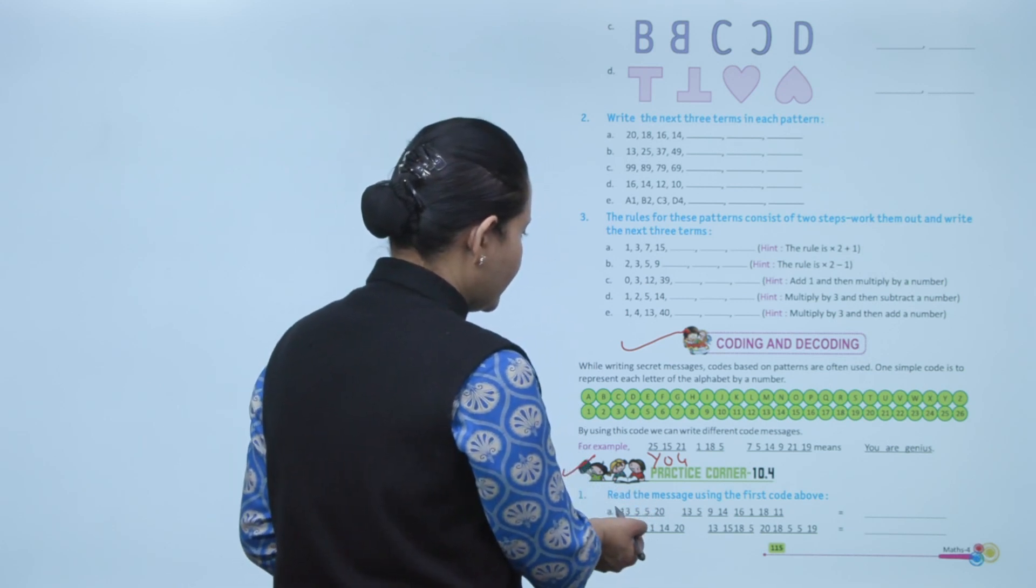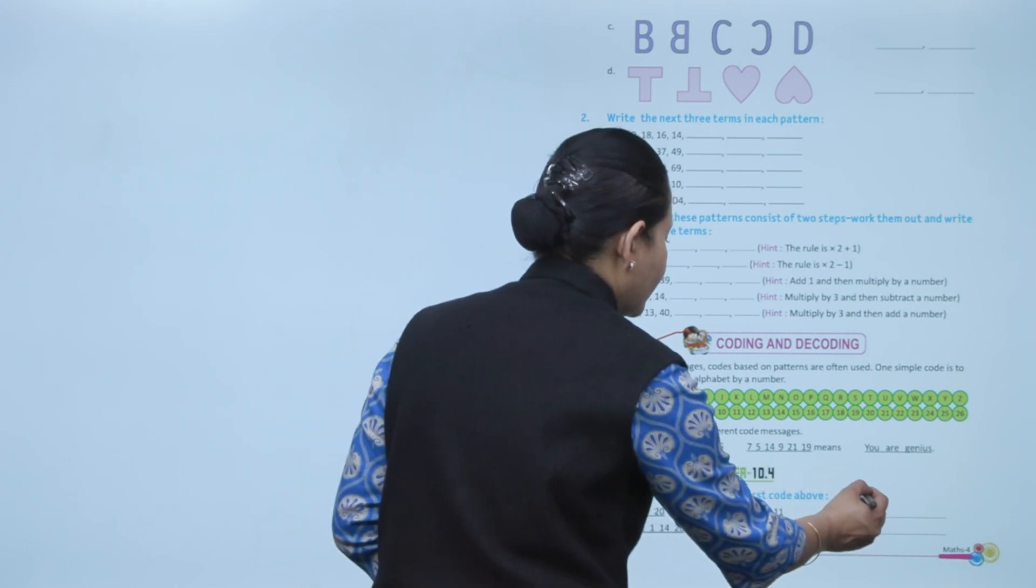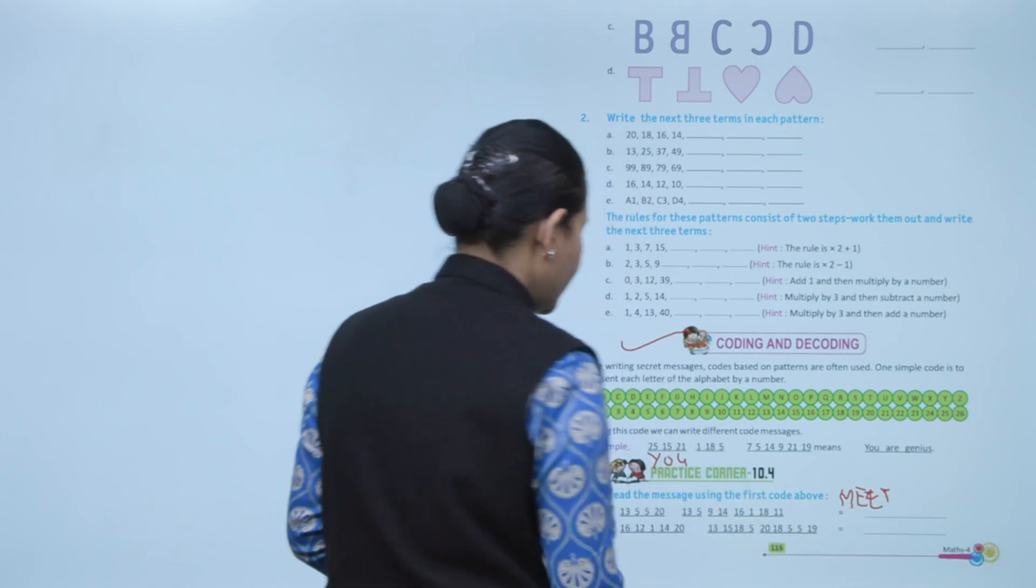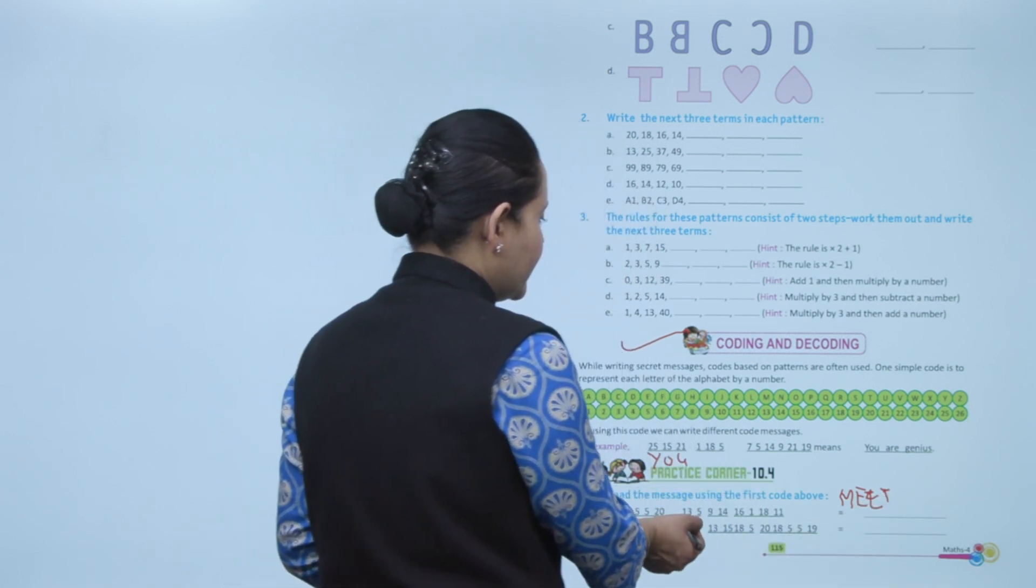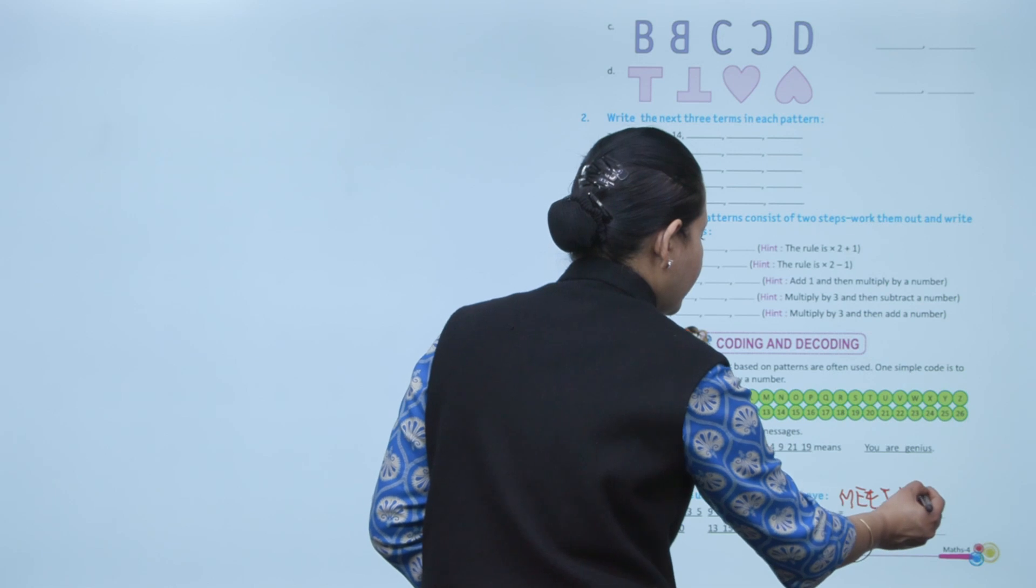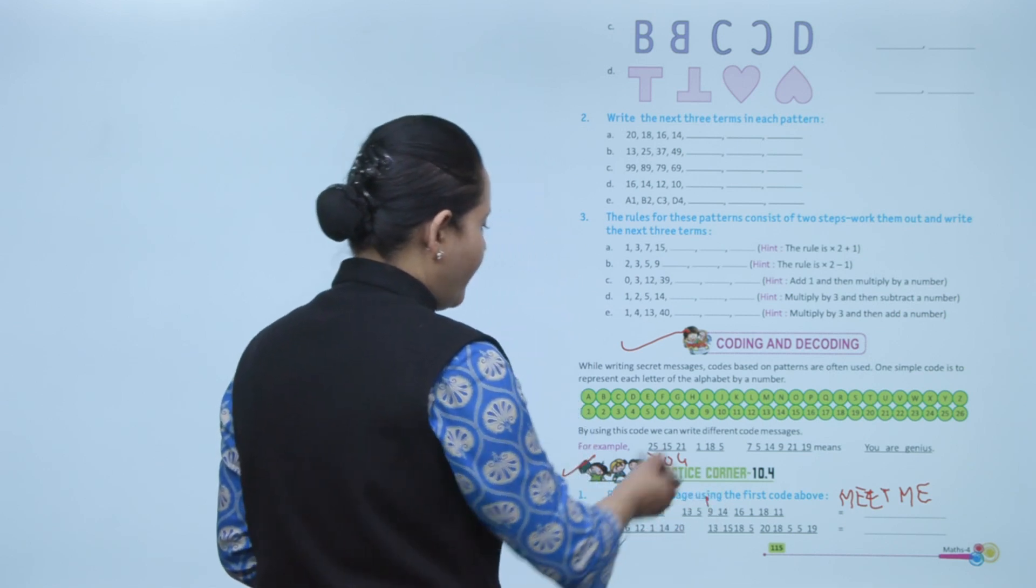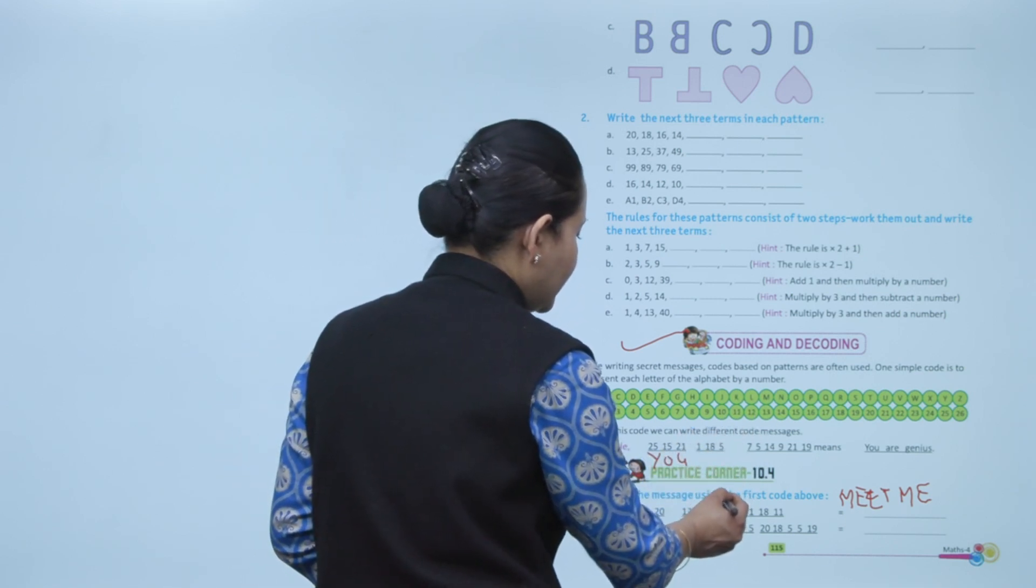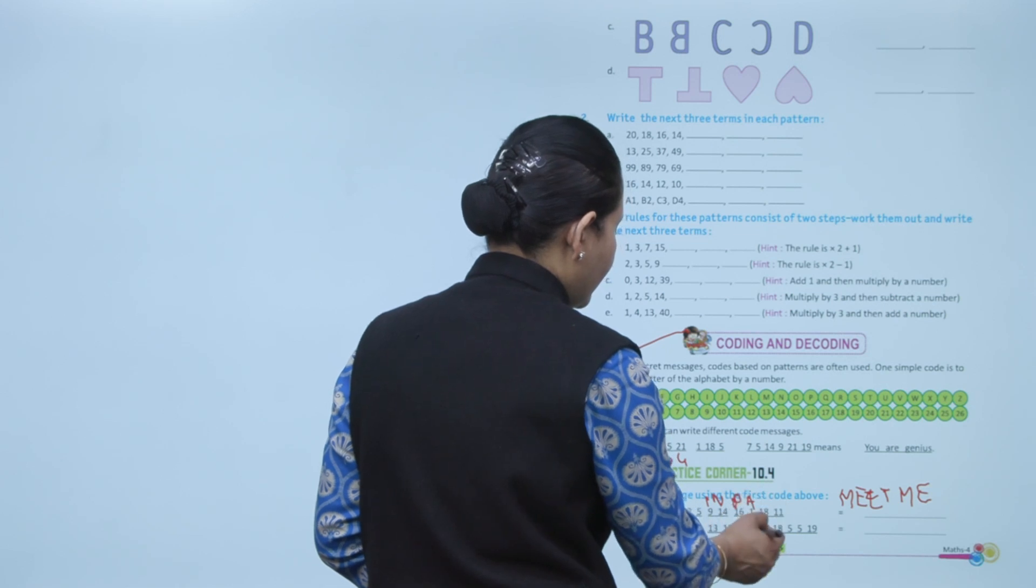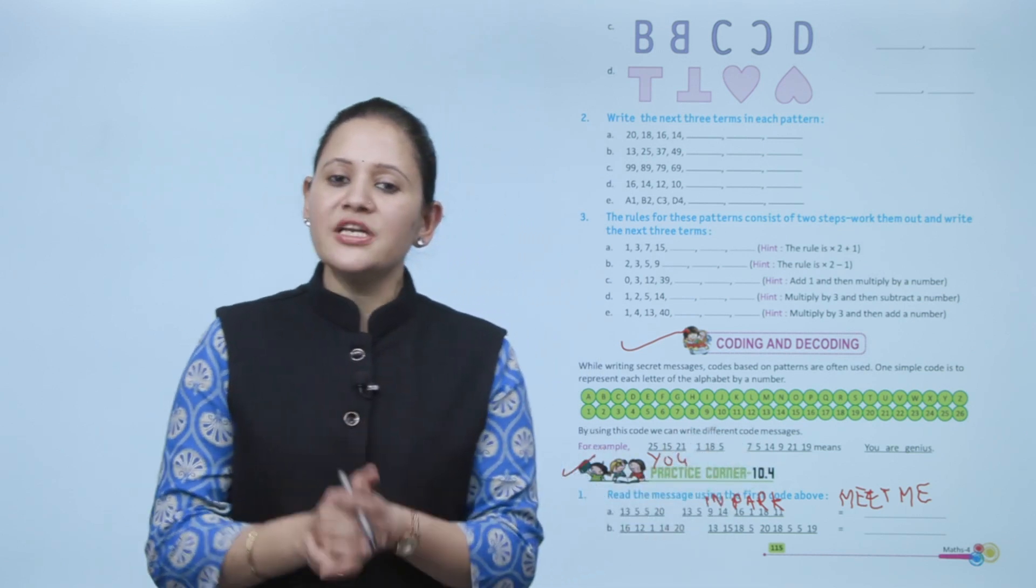So here, number 13 is for M, 5 is E, again 5 is E, 20 is T - 'meet.' Then 13, again M, then 5 is E. 'Meet me.' Then 9 is I, 14 is N - 'meet me in.' 16 is P, 1 is A, 18 is R, K - so the message is 'meet me in the park.' This is how you can decode the message.